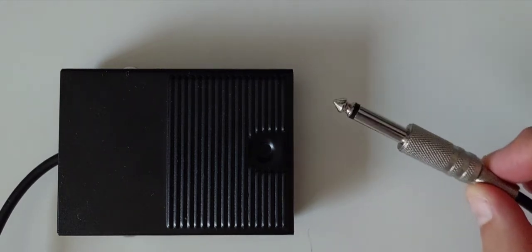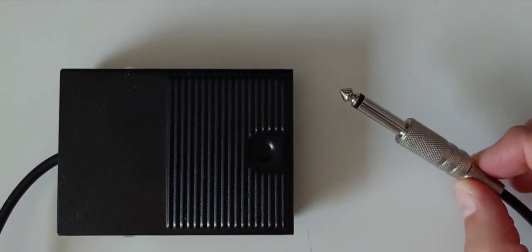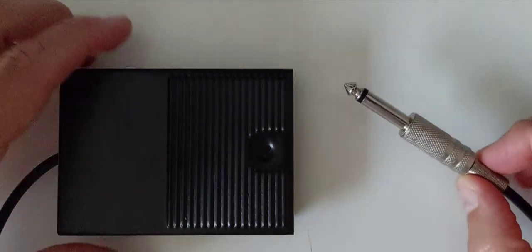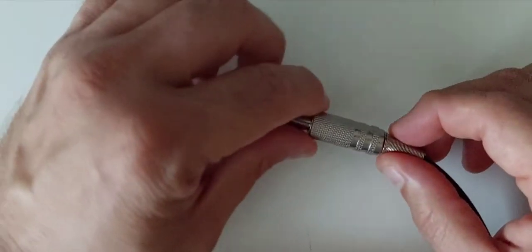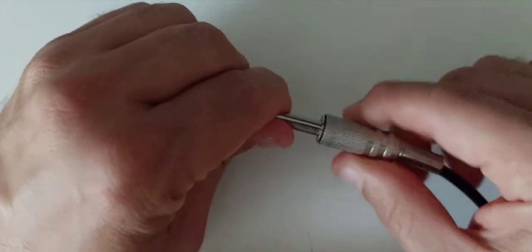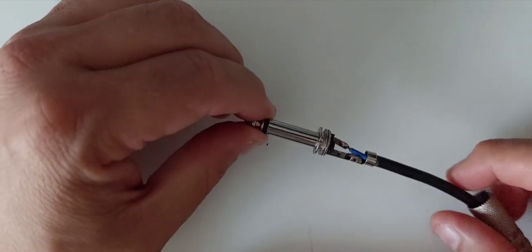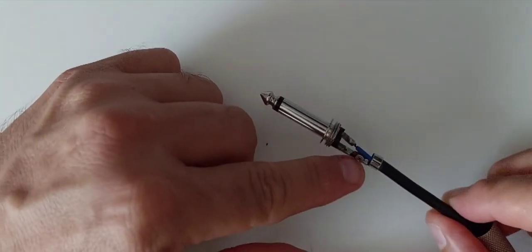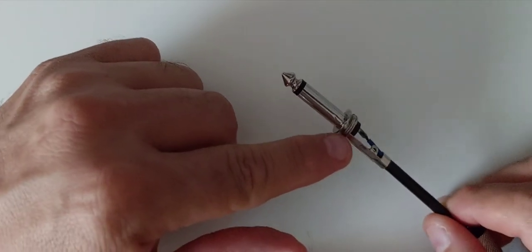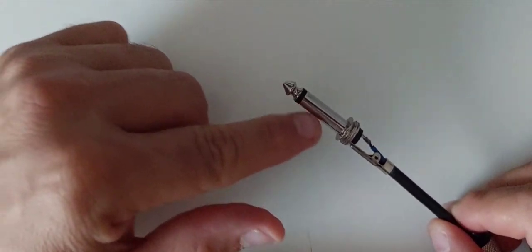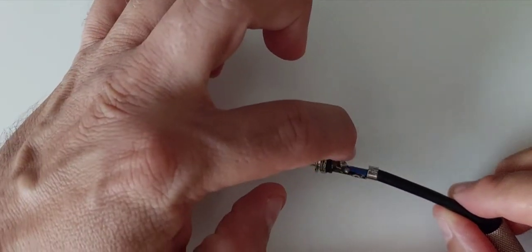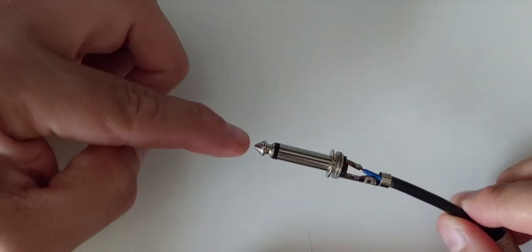This is the jack coming from the push-to-talk pedal switch, and I wanted to illustrate the connection. Nothing unexpected inside here. Two wires. One is soldered to the part which makes connection to the sleeve of the jack and the other wire to the tip.